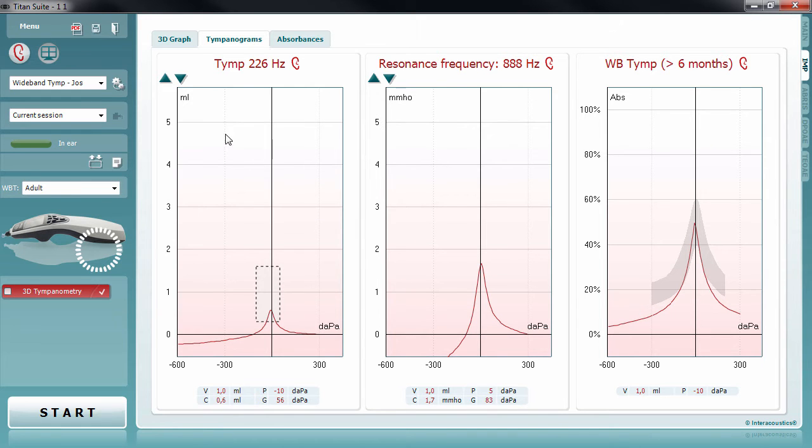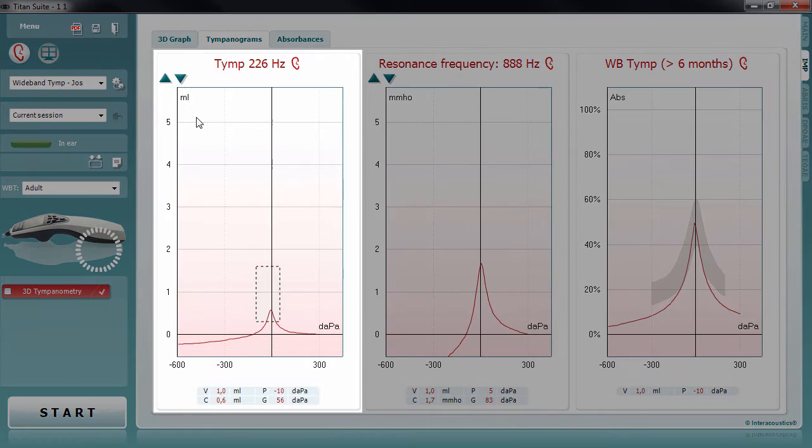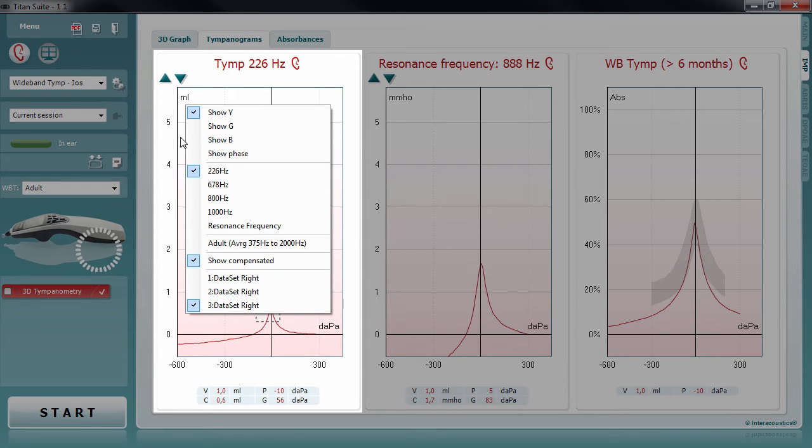Notice the tympanogram on the left-hand side of the screen. This is the traditional 226 Hz tympanogram measured in compliance. You can change the probe frequency of its tympanogram by right-clicking on the tympanogram. Notice that only probe frequencies which have had published studies associated with them are displayed here.